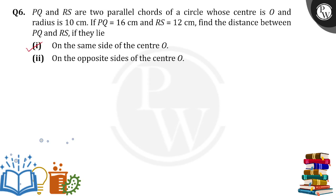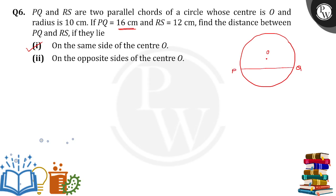So first, let's suppose there is a circle. In this particular circle, the center of the circle is O. The chord PQ is there, with PQ length equal to 16 centimeters. And RS is there, RS is equal to 12 centimeters. Now we are finding the case where they both are on the same side of the center of the circle.